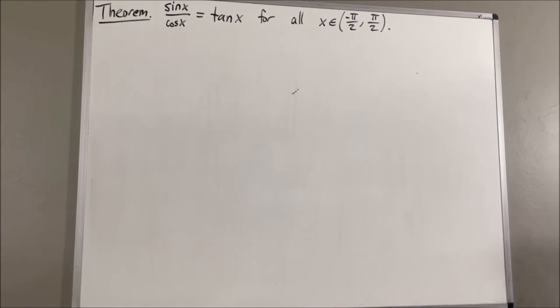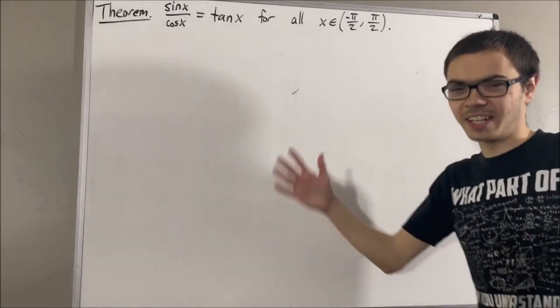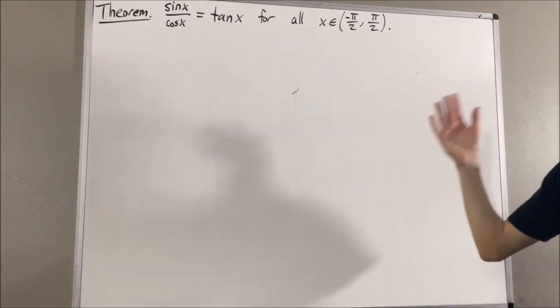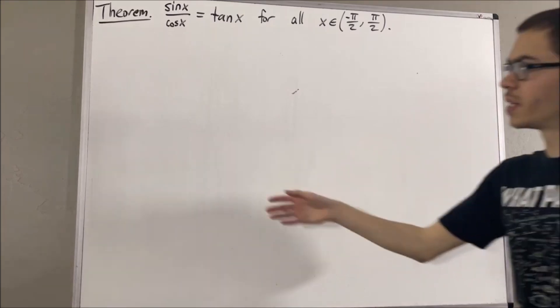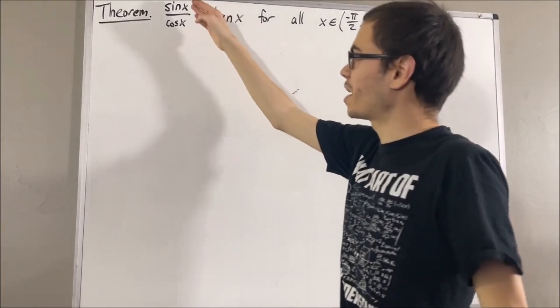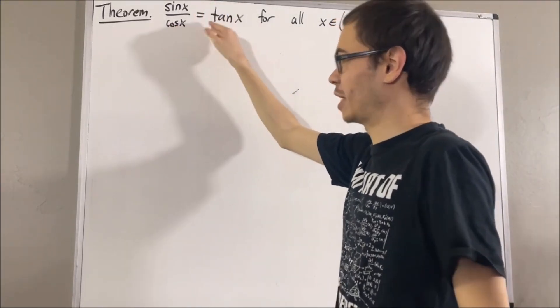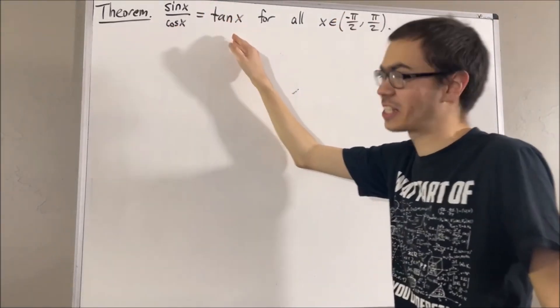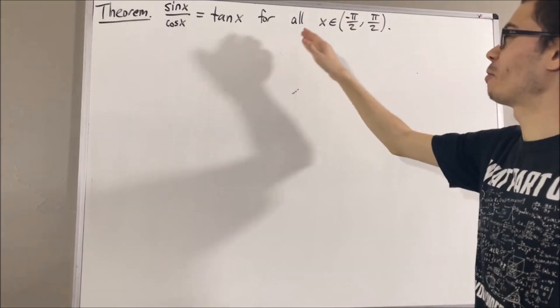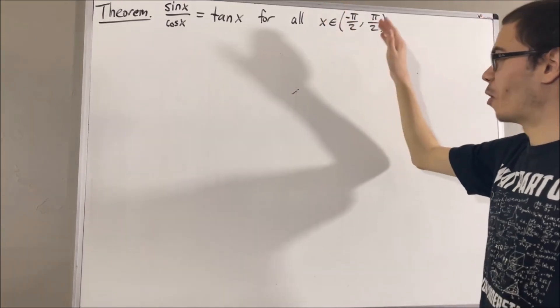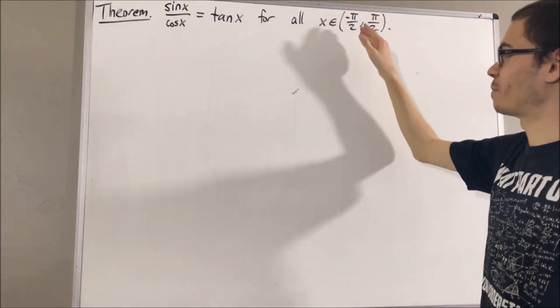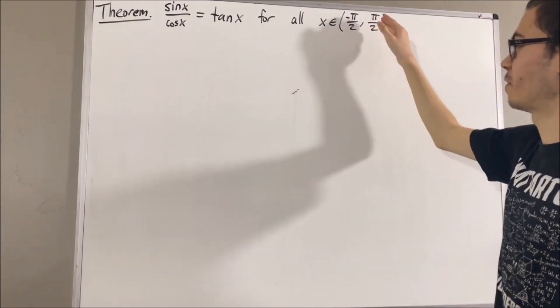Hello! In this video, we're going to prove the following theorem: sine of x over cosine of x is equal to tangent of x for all real numbers x in the open interval negative pi over 2, comma pi over 2.